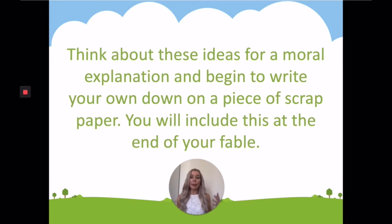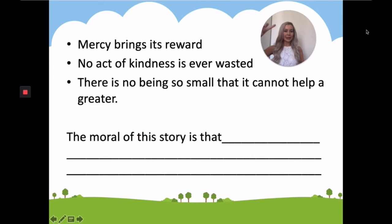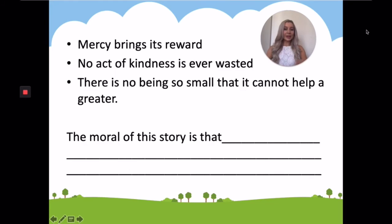Think about these ideas for a moral explanation and begin to write them down. Do this on a scrap piece of paper at first and start your sentence with: 'The moral of my fable is...' I've put the three main points here for you: mercy brings its reward; no act of kindness is ever wasted; there is no being so small that it cannot help a greater being. See if you can bring together some of those ideas and create your own sentence to explain what the moral of your story is.